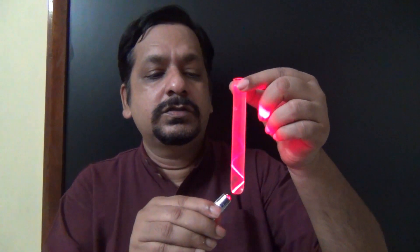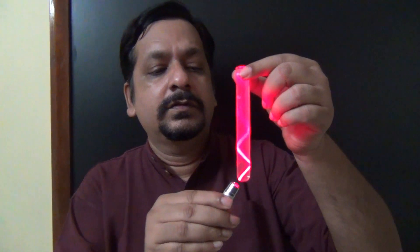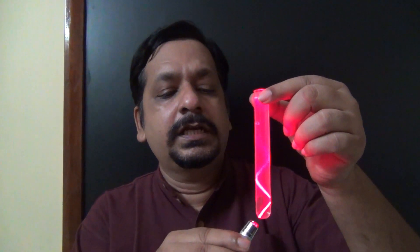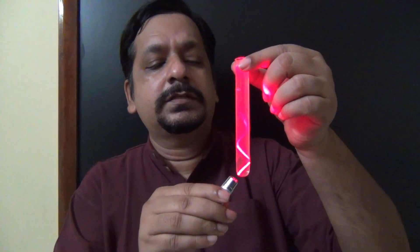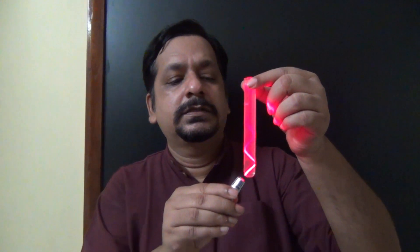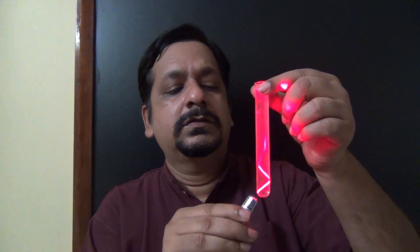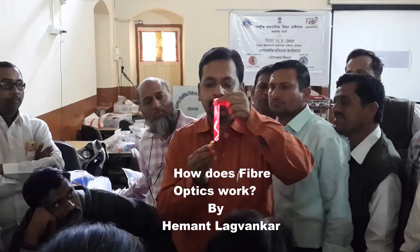The laser torch is now used. Internal reflection is taking place multiple times — you can see a zigzag path, and that is precisely what occurs in fiber optics. In fiber optics, multiple reflections take place and a signal propagates. You can clearly see the zigzag path. That is how we can observe total internal reflection of light.